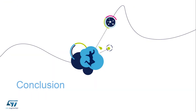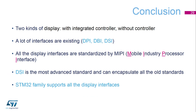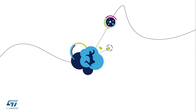As a conclusion, there are two kinds of displays — with or without an integrated controller. Many interfaces exist: DPI, DBI, and DSI, and all display interfaces are standardized by the MIPI organization. DSI is the most advanced standard and can encapsulate all the older standards. The STM32 family supports all display interfaces. Thank you for your attention and we invite you to follow the next course.